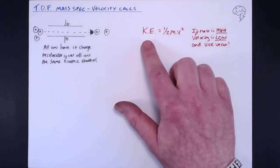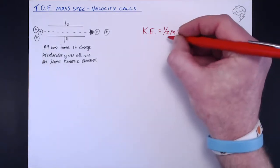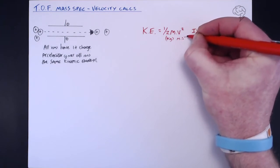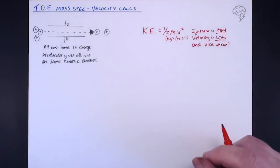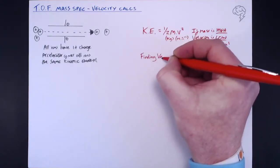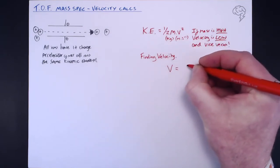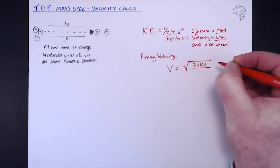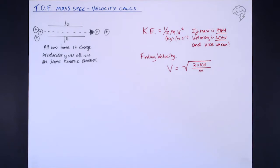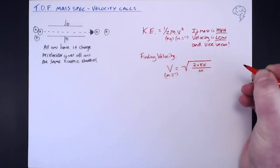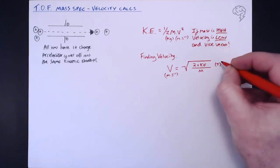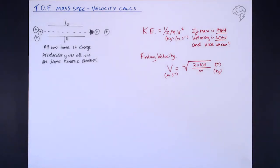Sometimes they may ask you to calculate the kinetic energy using the mass and the velocity, in which case you use KE = ½mv². The mass needs to be in kilograms and the velocity in meters per second. But a lot of the time they're going to ask you to calculate the velocity, so: velocity equals the square root of two times the kinetic energy divided by mass. Just remember this one because it is a really common question — it asks you to find the velocity given the kinetic energy and the mass of the isotopes. Velocity is in meters per second, kinetic energy is in joules, and mass is in kilograms, so there may be some unit conversion required.